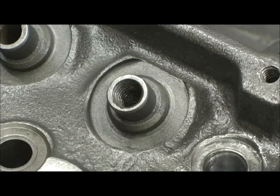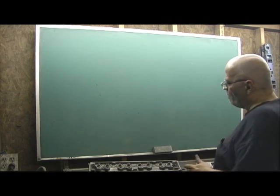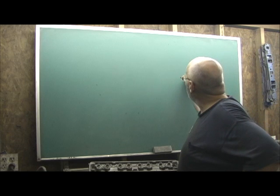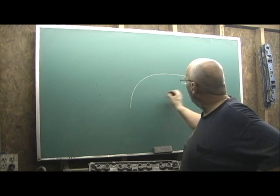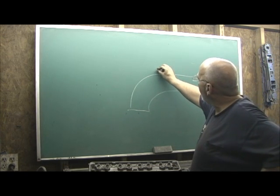But before we do that, there's a couple of things I want you to understand. We're going to go to the blackboard here for just a minute. First, there's something I want you to understand. Let's pretend here's the roof of the port, there's the bowl, here's the entrance to ski jump. Now let's take a look at our guide.